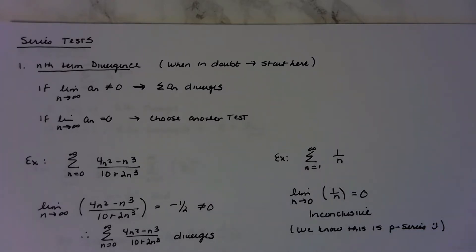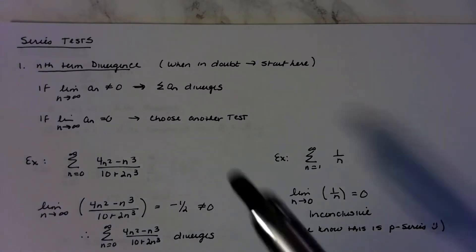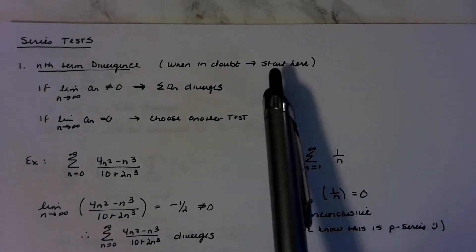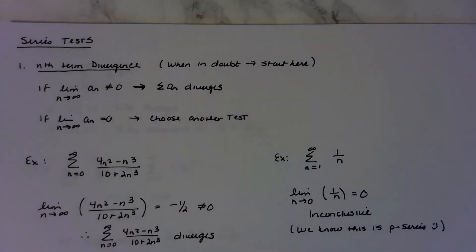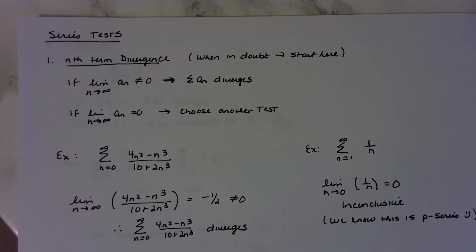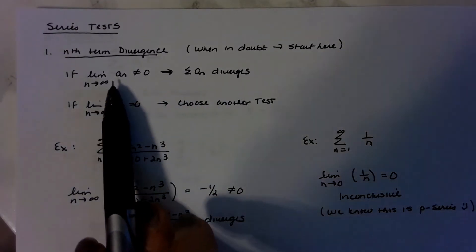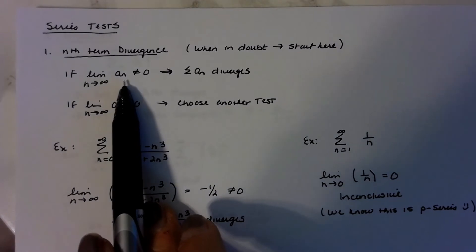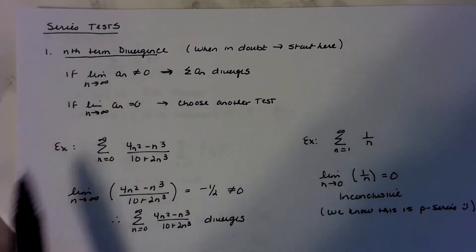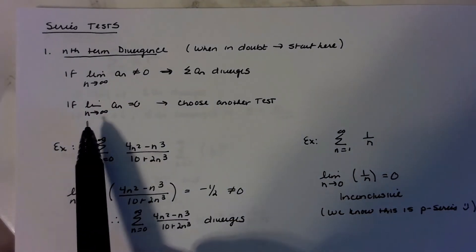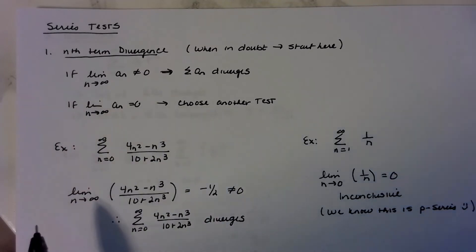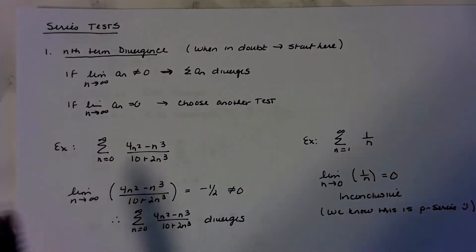Nth term divergence test. A little note here: when in doubt, start here. The nth term divergence test says if the limit of the series does not equal zero, then the series is going to diverge. And if it equals zero, then you need to choose another test.